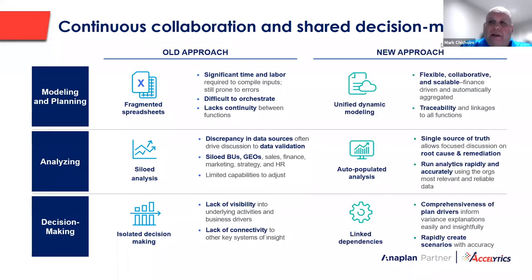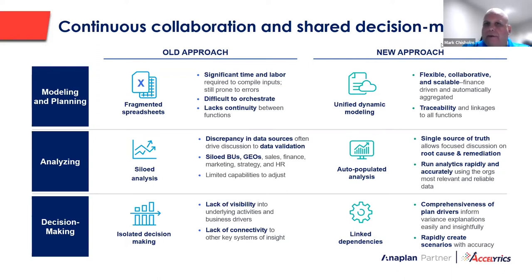What Anaplan provides is a new approach — and what's needed is a new approach to overcome those challenges as well as the traps of legacy technologies. The new approach is really all about unified dynamic modeling, which is a flexible, collaborative, and scalable approach. There's traceability and linkages to all other functions and planning across the organization, a single source of truth for planning, and the ability to run analytics and analysis rapidly and accurately. There's also comprehensiveness of plan drivers — linked dependencies — so how does the output of one step in the planning process affect the other, and what are the downstream implications of changes made in upstream dependencies?